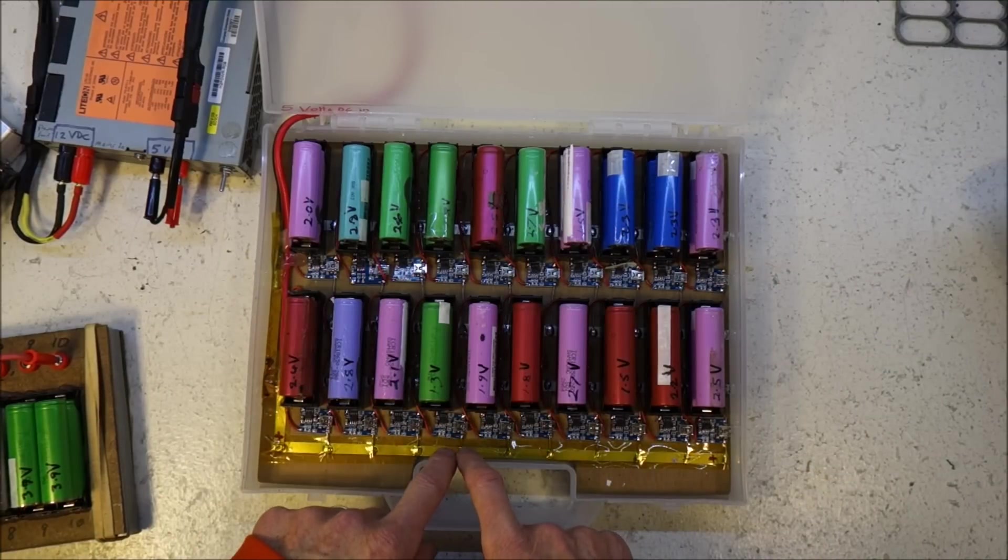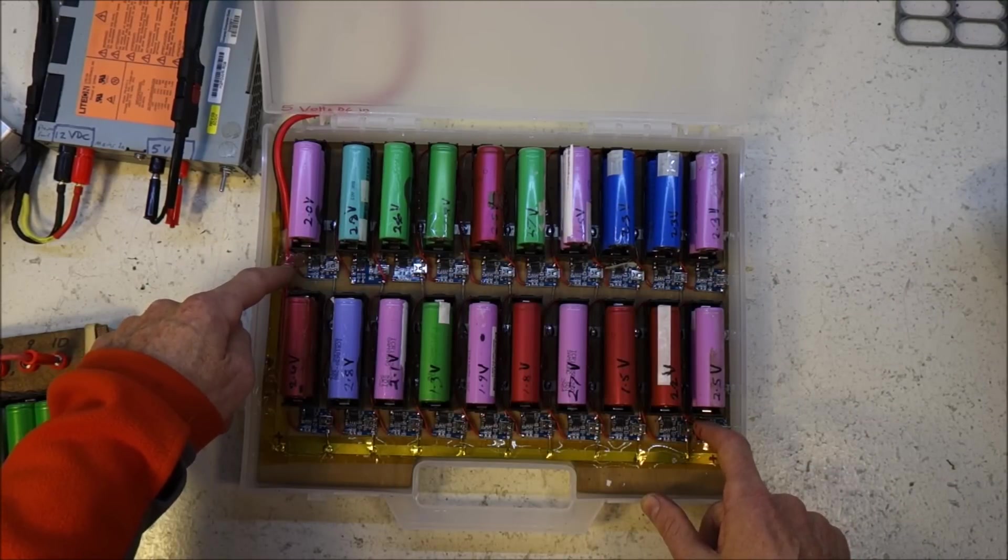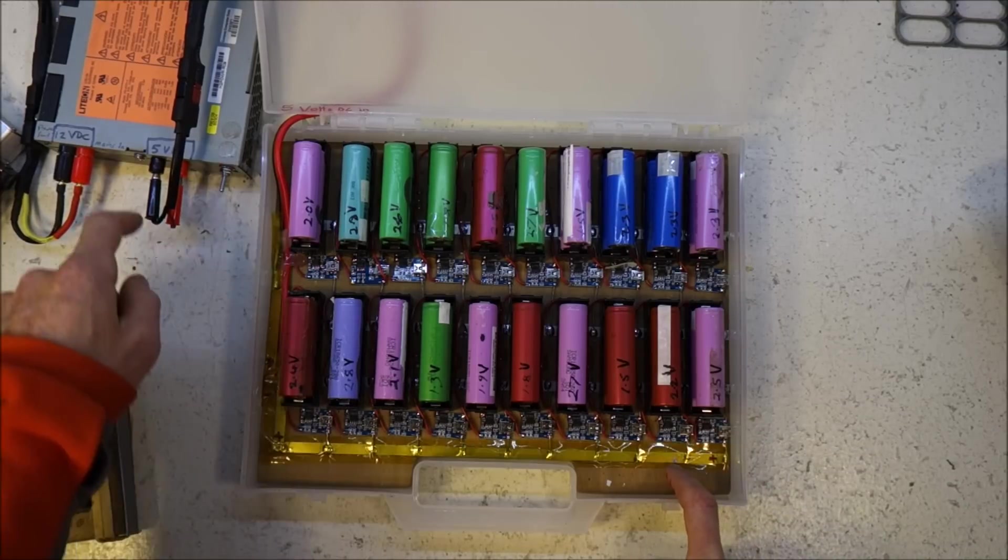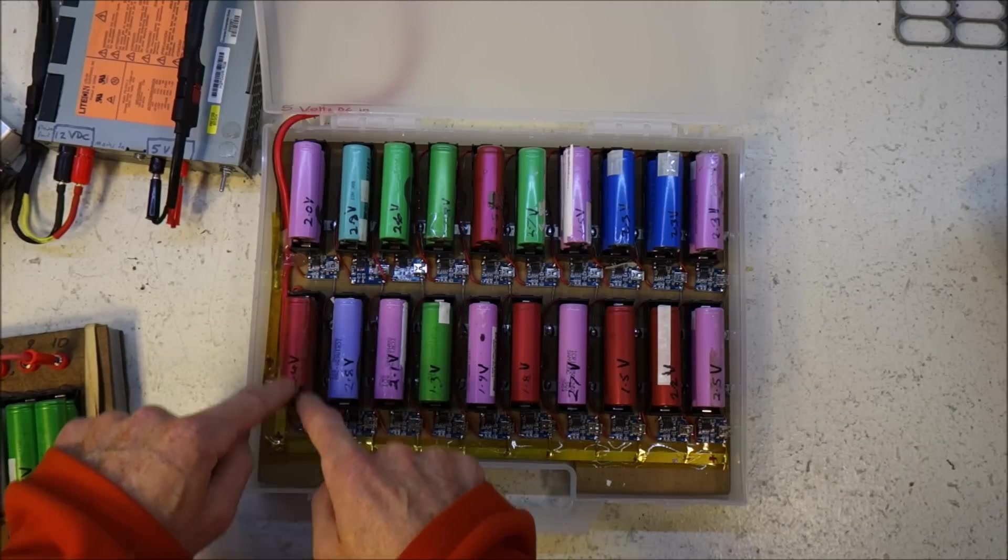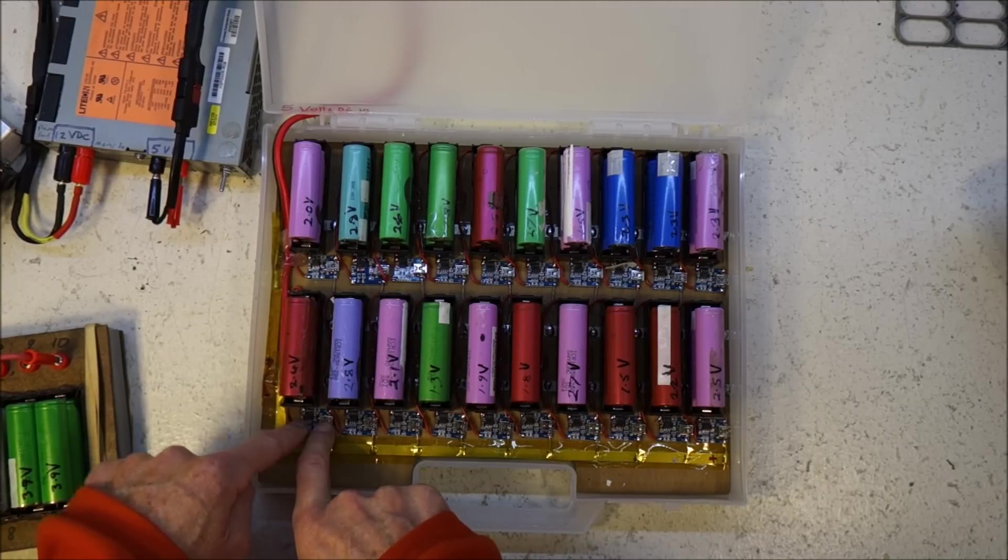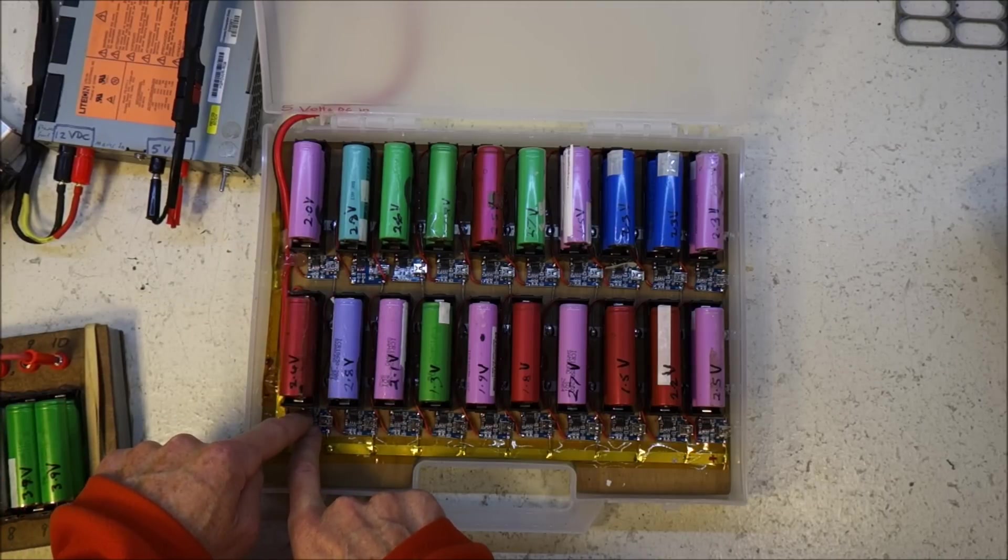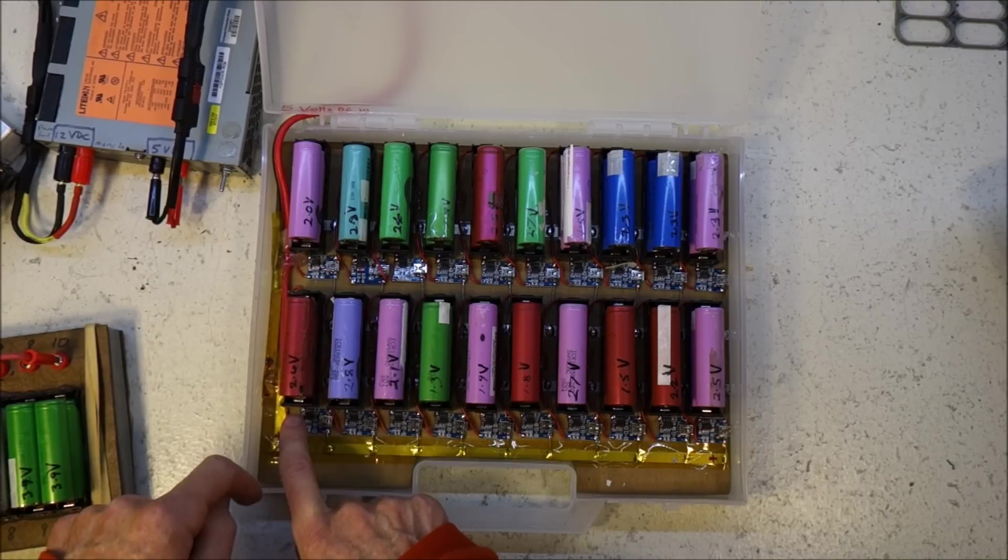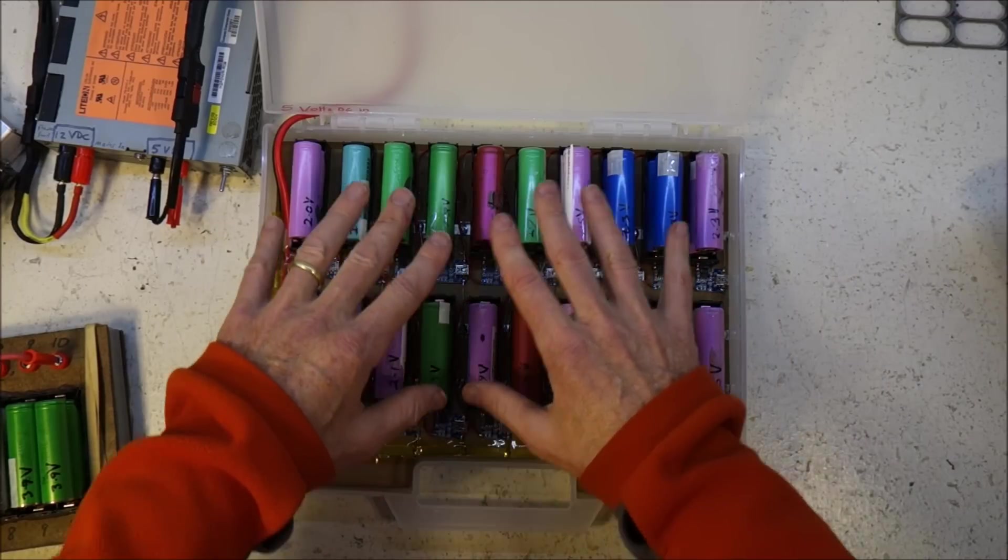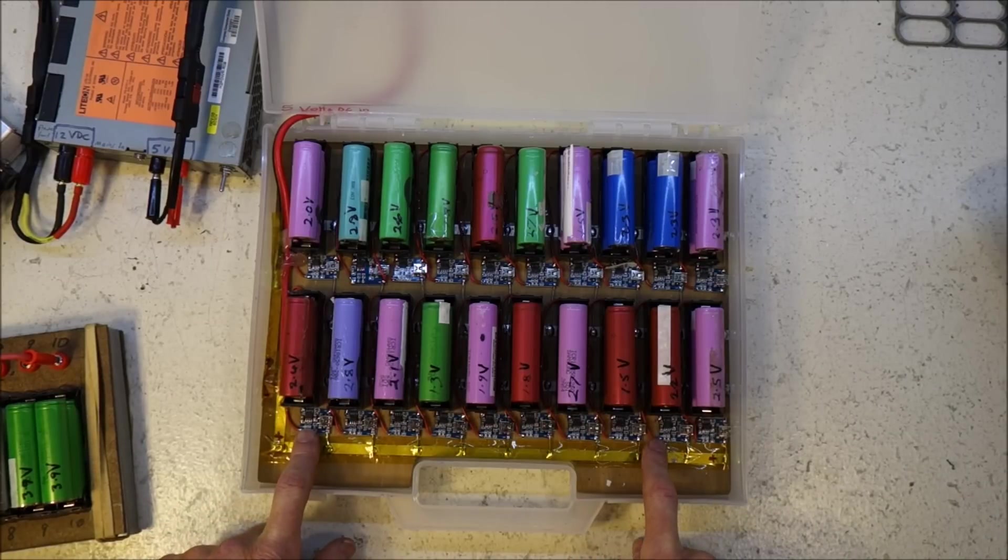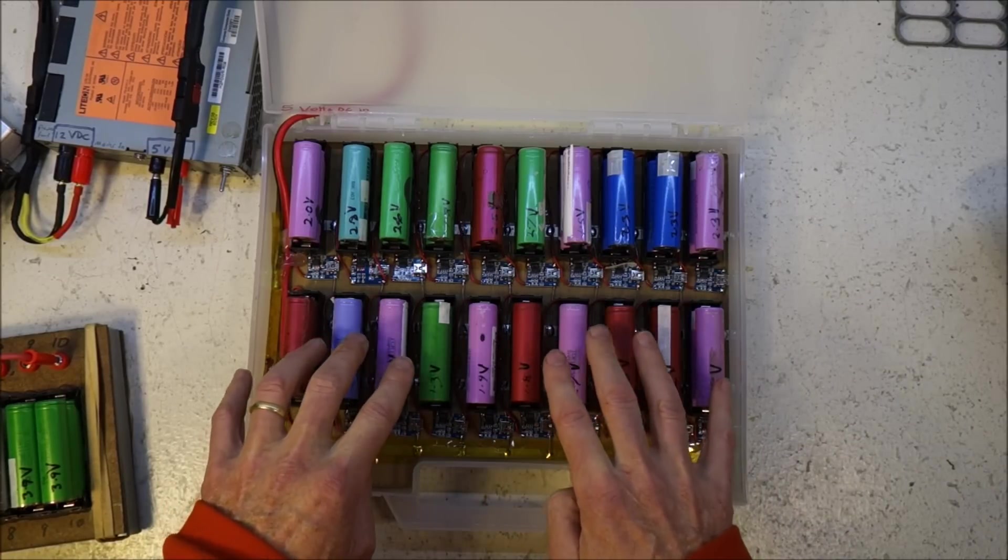The negative power rail on all 20 of these is connected to negative, the positive power rail is connected to all 20, but each battery is only connected to one charger. So the positive of each one of these is not connected to anything else. So these are not in series and they're also not in parallel. The modules are powered in parallel, but the batteries are not in parallel.